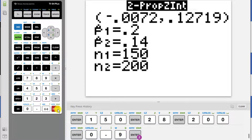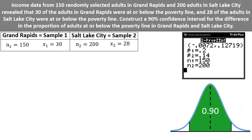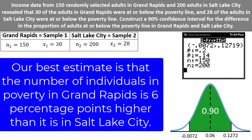The confidence interval ranges from negative 0.0072 to 0.12719. Let's draw the graph related to this confidence interval. Negative 0.0072 is on the left side and 0.1272 is on the right side. The point estimate is the difference in sample proportions, 0.2 minus 0.14, which is equal to 0.06. Our best estimate is that the number of individuals in poverty in Grand Rapids is 6 percentage points higher than it is in Salt Lake City.